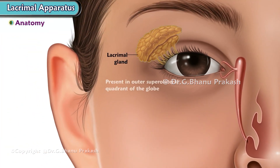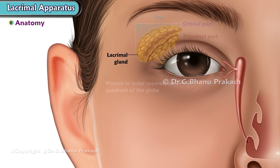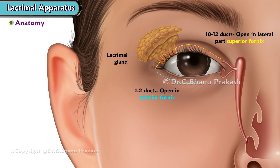The main lacrimal gland is present in the outer supralateral quadrant of the globe. It is 2 cm long and has two parts: the orbital part, which is longer, and the palpebral part. 10-12 ducts open in the lateral part of the superior fornix and 1-2 in the inferior fornix.